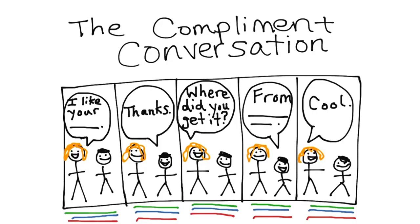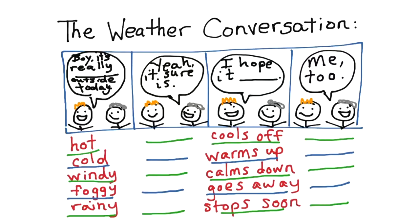Let us take an example — a compliment conversation. You meet somebody, you like their shirt, and you tell them 'Oh, I like your shirt, this is a very good color.' The person reacts saying 'Oh, thanks,' and then you take the conversation forward: 'Where did you get it?' 'Oh, I got it from this particular market.' Conversations also typically revolve around generic formulas — for example, a weather conversation is a decent starter when meeting somebody for the first time: 'Today is really hot' — 'Yes, I am also feeling rather warm.'